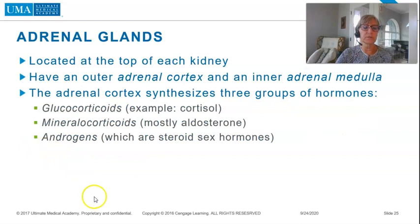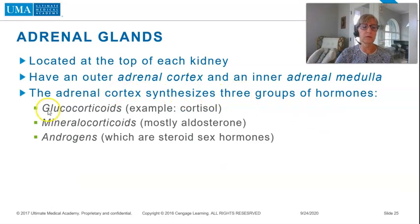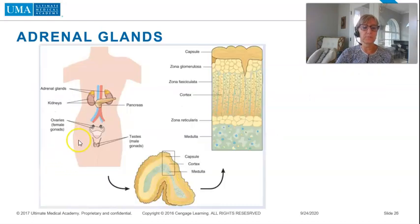The adrenal glands are located at the top of each kidney and have an outer adrenal cortex and an inner adrenal medulla. The adrenal cortex synthesizes three groups of hormones: glucocorticoids, mineralocorticoids, and androgens. This graphic shows the adrenal glands in relation to the kidneys, ovaries for the female, and gonads for the male.